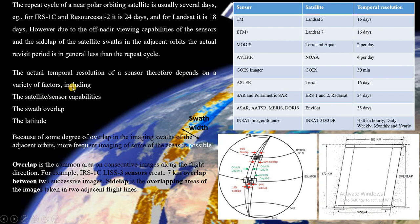Temporal resolution also depends on the viewing angle of the sensor. If the sensor has a large viewing angle, then the swath width will be very high, and a polar orbiting satellite will take less time to cover the whole globe. Similarly, if the sensor viewing angle is very narrow, the swath width will be very narrow, and it takes a lot of time to cover the whole globe, so the temporal resolution will be lower.